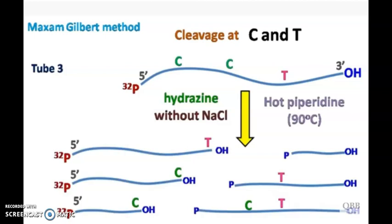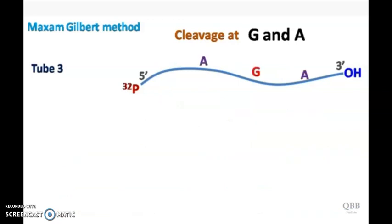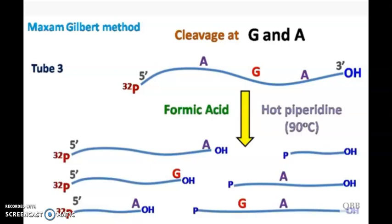Now for C and T, hydrazine without any salt is used. For G and A, this will be treated with formic acid and piperidine.